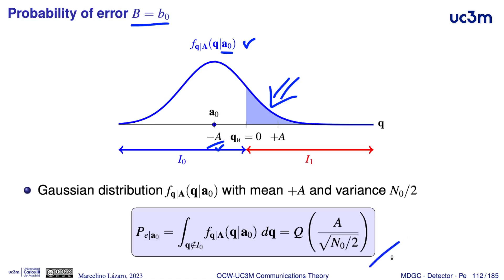This integral is equivalent to the area shown in blue in this picture. We use the Q function to obtain the integral for this Gaussian distribution, and we have Q of: in the numerator, the distance between the mean of the Gaussian and the threshold, which is A, and in the denominator the standard deviation of the Gaussian distribution — in this case the square root of N0 over 2.